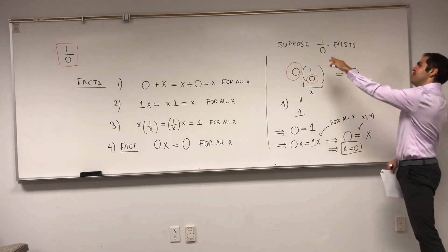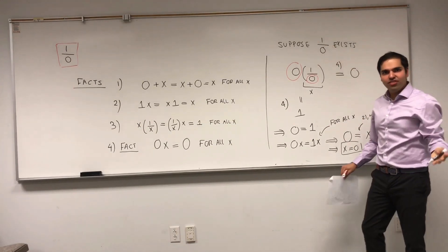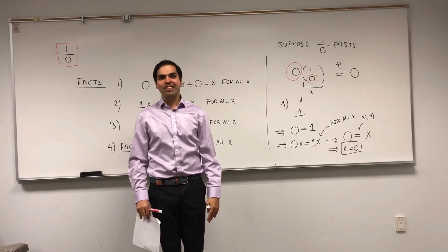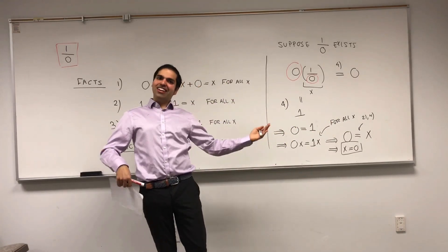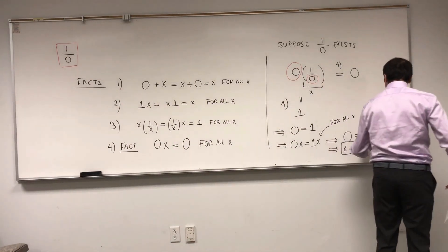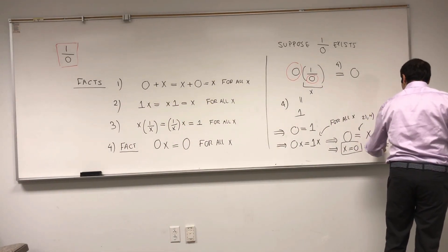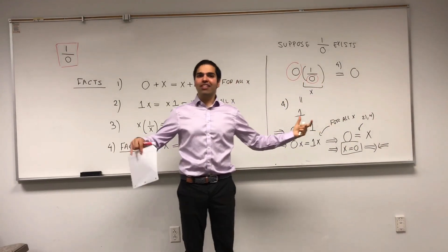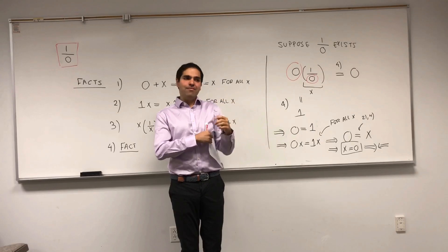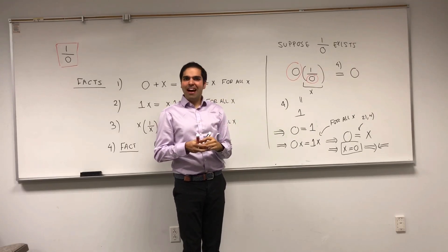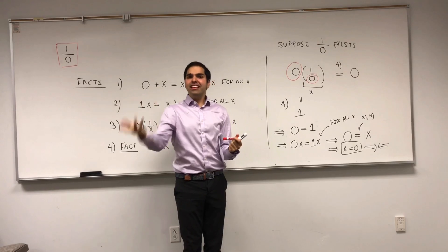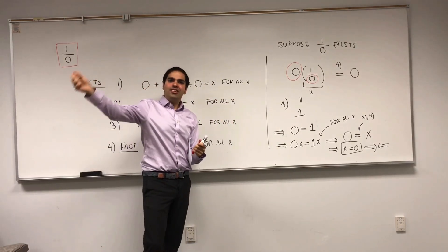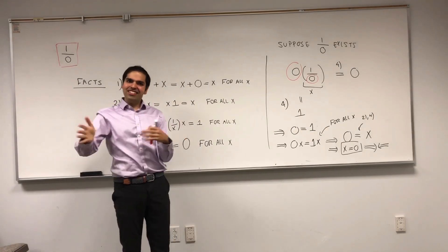In other words, let me summarize. If you actually assume that 1 over 0 exists, then everything in the world would be equal to 0. And, that's a contradiction, because the beauty of math is, it's not really equalities. The beauty of math is in the inequalities. By this, I mean that what's nice about math is that everything is different.